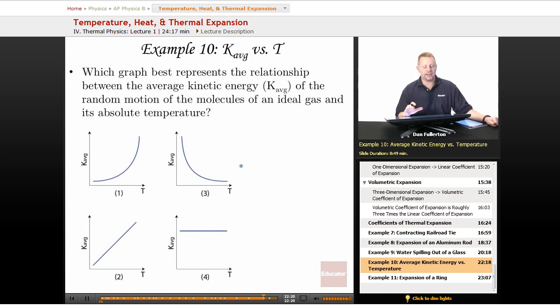All right, let's take a look at an example problem where we're looking at some graphs of average kinetic energy versus temperature. Which graph best represents the relationship between the average kinetic energy of the random motion of the molecules of an ideal gas and its absolute temperature?